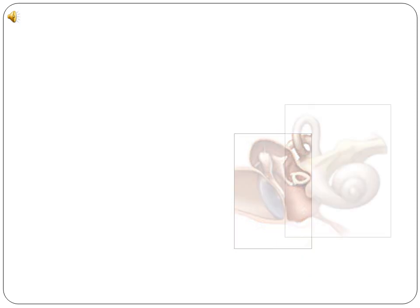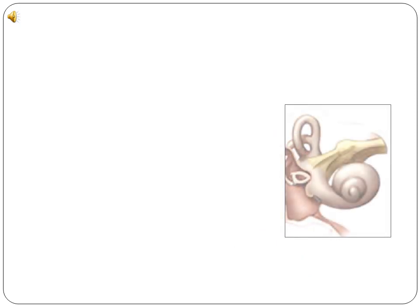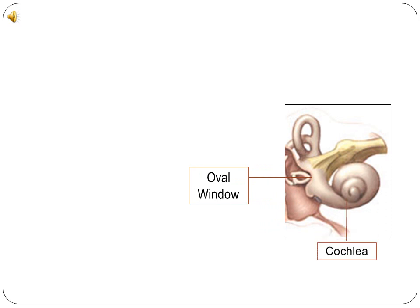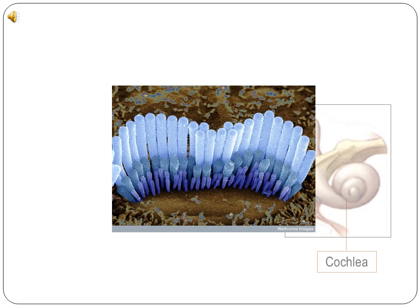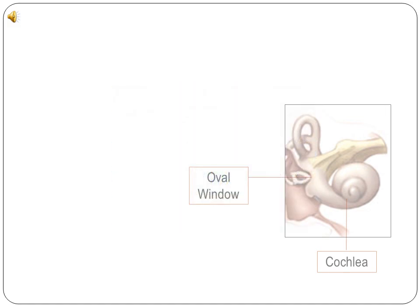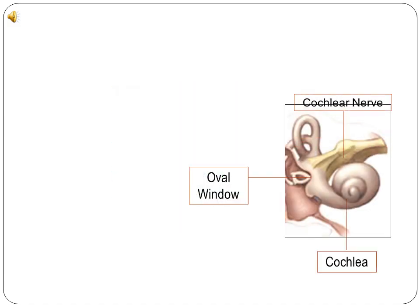These vibrations are transmitted by the stapes through the oval window of the labyrinth and into the fluid-filled cochlea, where they are detected by some 30,000 special sensory hair cells. These hair cells produce nerve impulses which are passed along the cochlear nerve and eventually enter the temporal lobes.